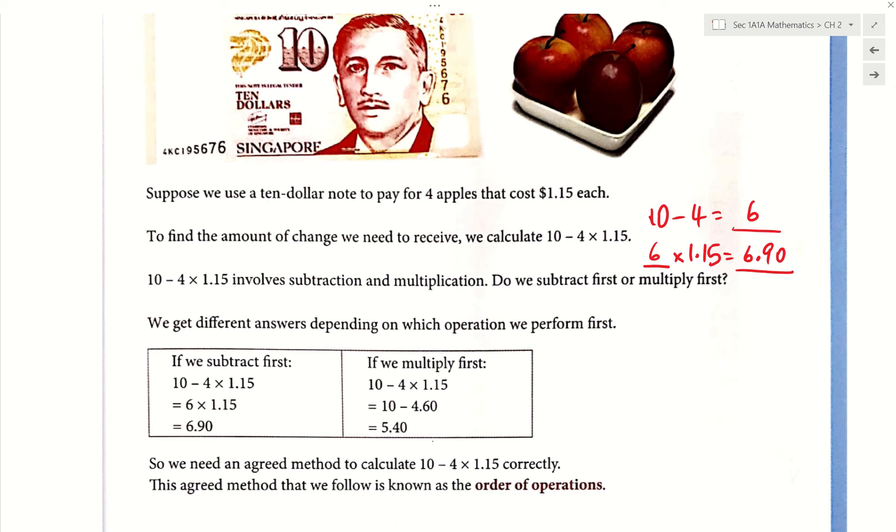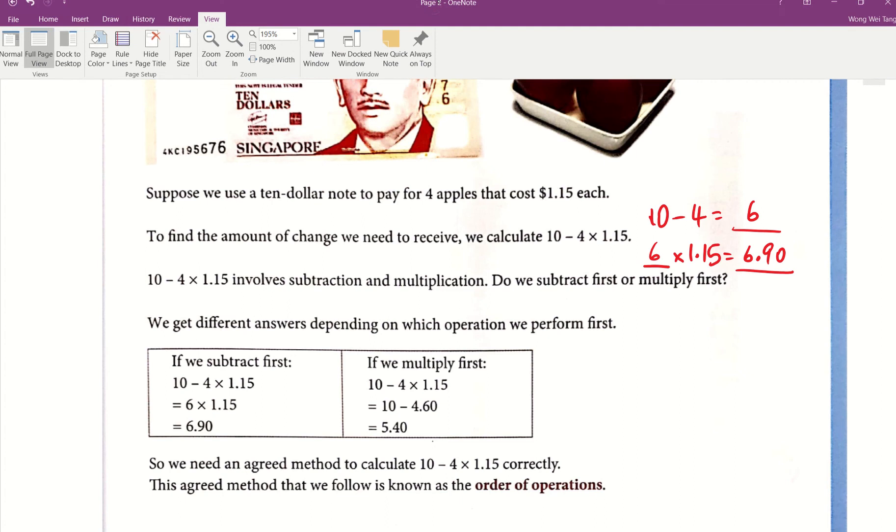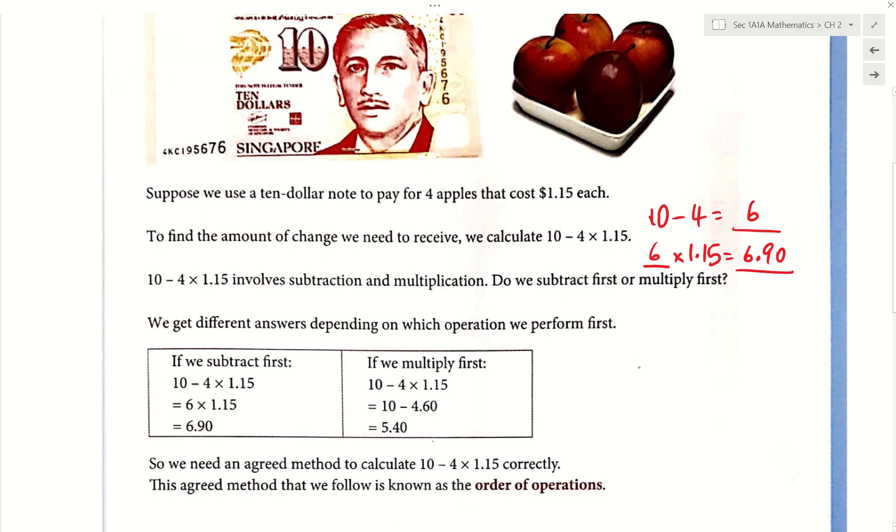Now what about the other half of the class? I want you to try 4 times 1.15. Give me the answer, then 10 minus that answer. 4 times 1.15 is 4.60. So 10 minus 4.60, what do we have? 5.40.